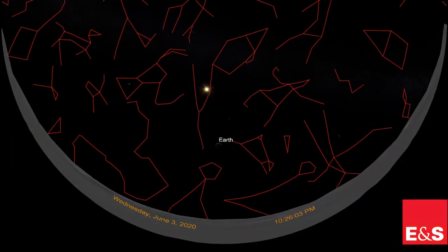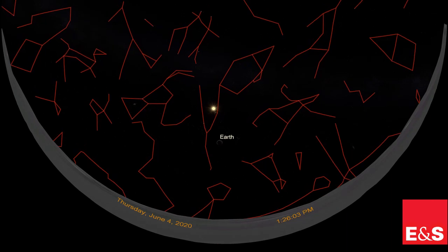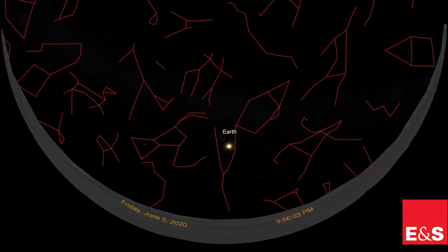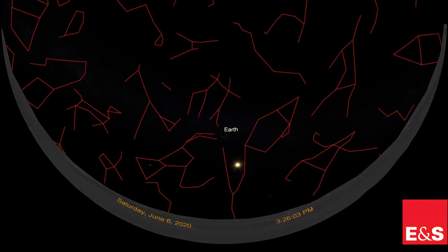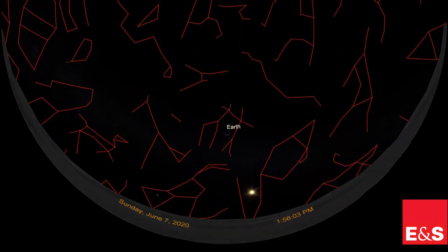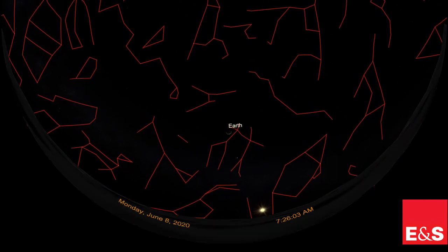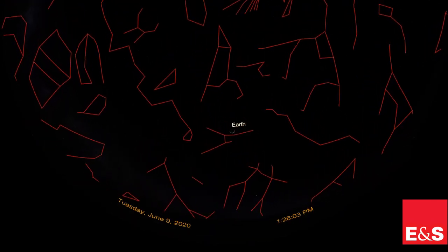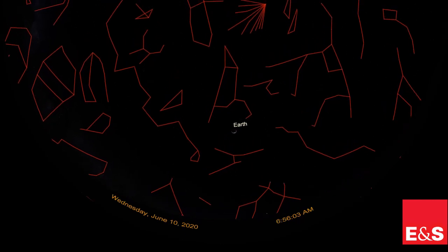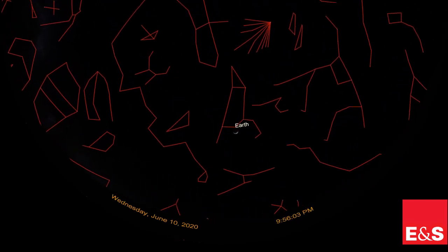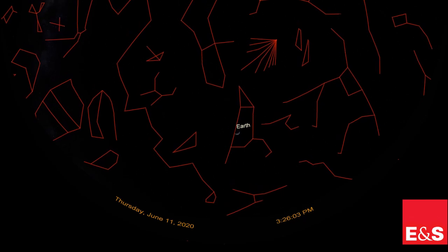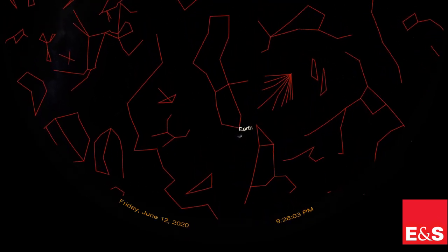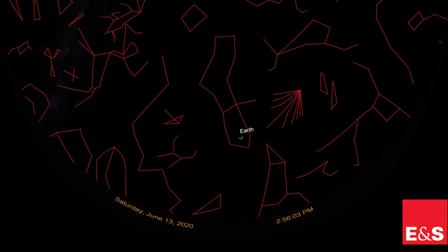To see more about that, we're using our Evans and Sutherland Digistar software to park ourselves at one place on the moon. So we're sitting on the surface of the moon, watching time go by. There's the sun setting, and we have orange sticks for the constellations in case you can't see the little dots for the stars. The moon rotates every two weeks, roughly. So on the moon, if you stayed in one place on the surface, you would see the sun and the stars rise and set in a two-week cycle.